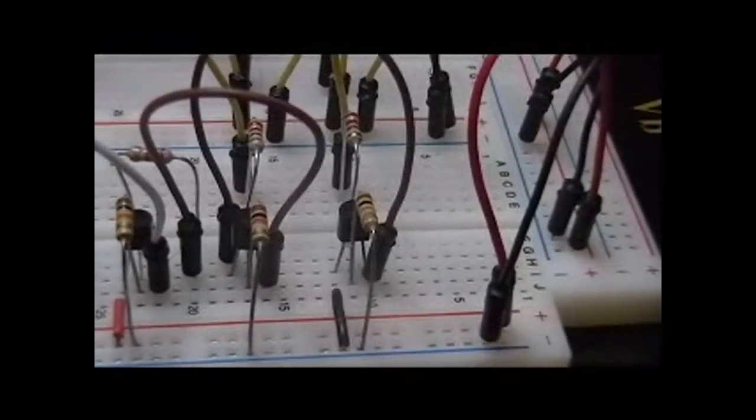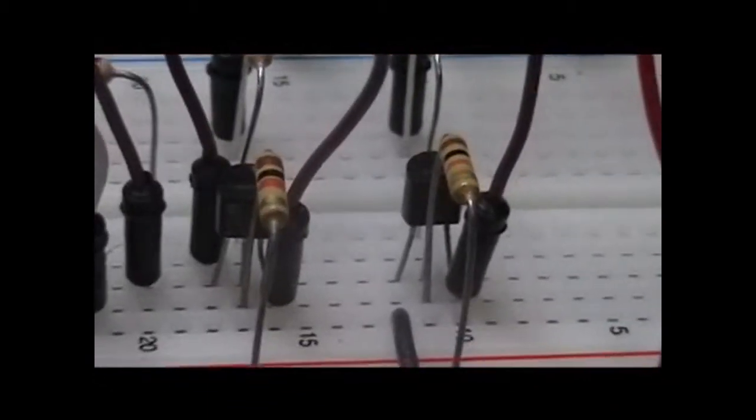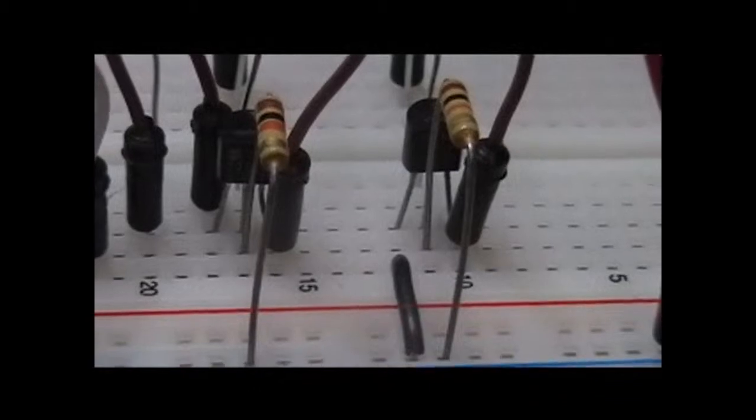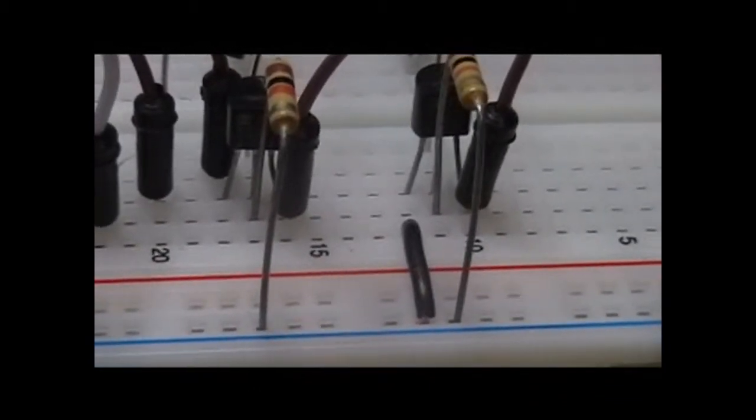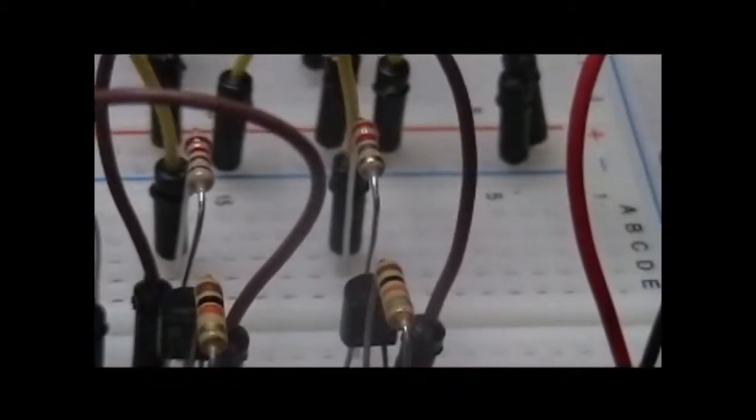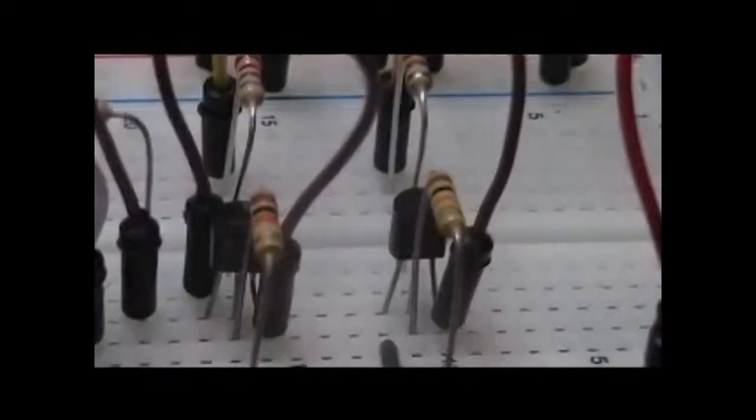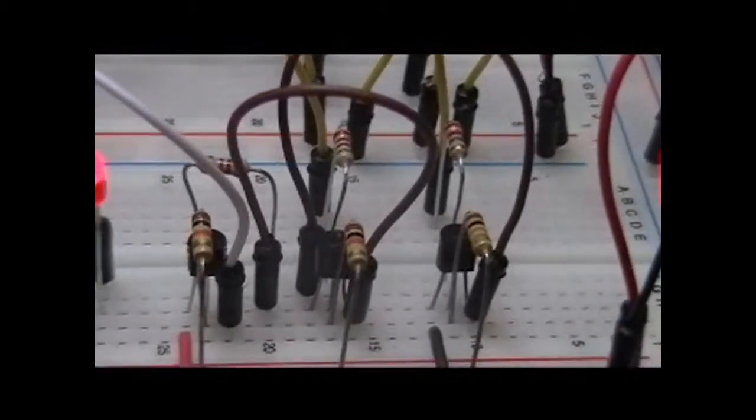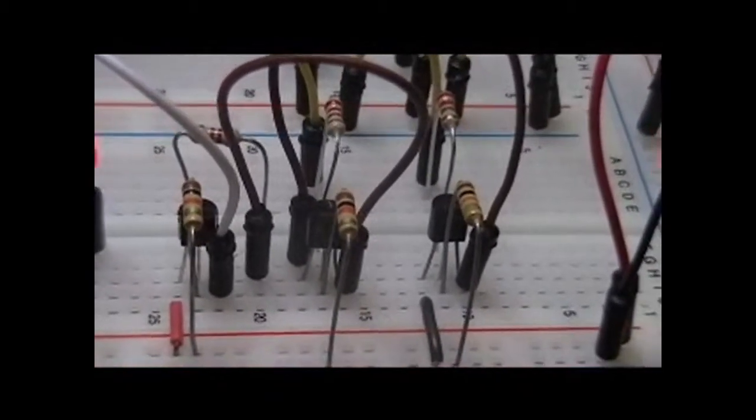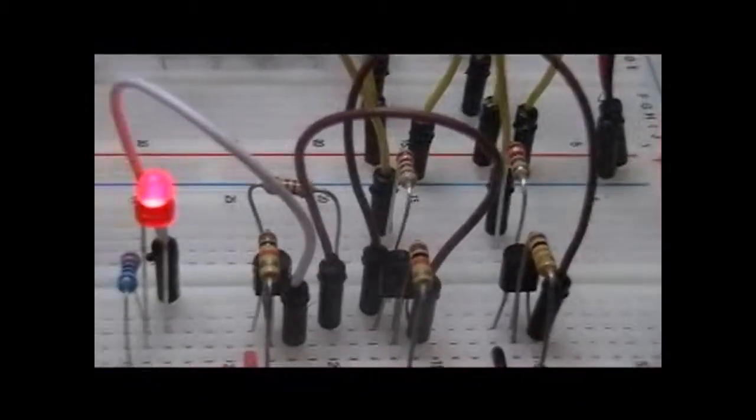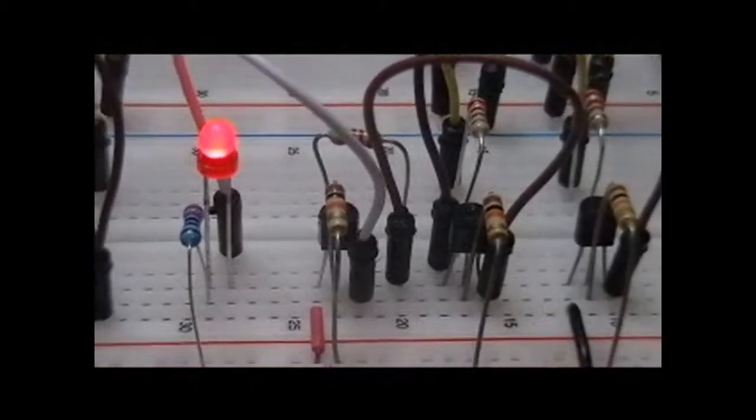These two transistors right here are the two we're talking about. The one on the right has a connection to the emitter from ground. We then have this black wire that connects from the collector of this one to the emitter of the second one. And then ultimately, a wire that comes out of the collector of the second one and into a third transistor, which I'll explain in a minute.